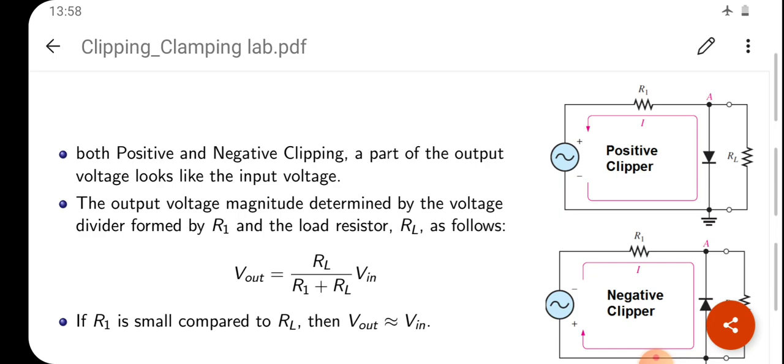If we want to find out the voltage across RL, Vout will be equal to total voltage. What is input voltage? Vin. Vin into the branch resistance, the particular branch resistance that is RL, divided by total resistance in the series network. What is it? R1 plus RL. That is the voltage divider rule.